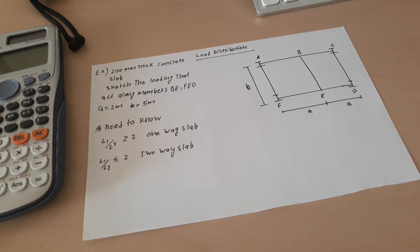I'm going to read the question and you can listen. The question is: the steel framework is used to support the reinforced concrete slab that is used for an office. The slab is 200 millimeter thick. Sketch the loading that acts along the members BE and FED.